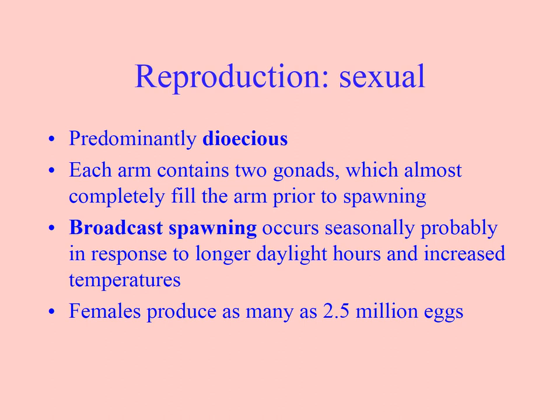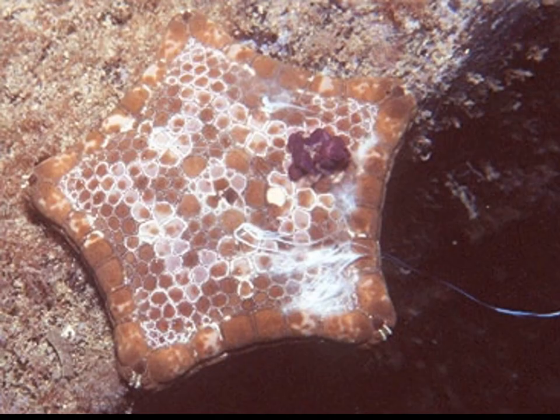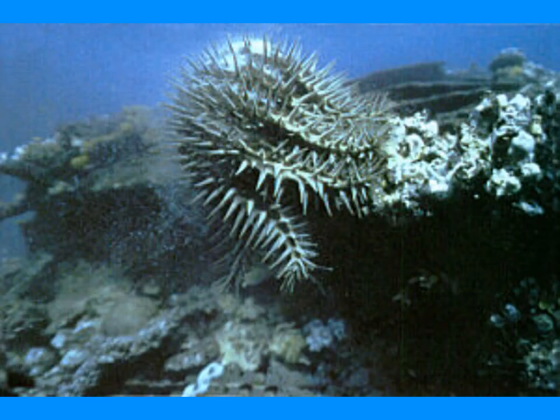In terms of reproduction, most sea stars are dioecious. They broadcast spawn and can be incredibly fecund — fecund being a measure of how many offspring you can produce. Some female starfish can produce as many as two and a half million eggs in a year. Here they are releasing sperm or eggs from the gonoducts — this is the classic pose of a crown of thorns starfish spawning. There's also a cushion star releasing very tiny eggs.